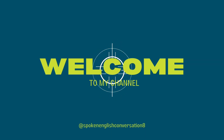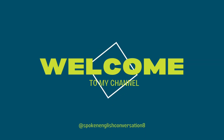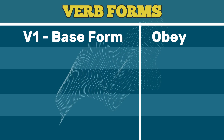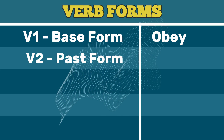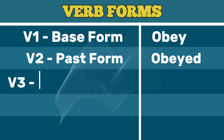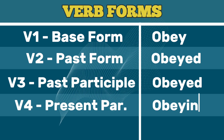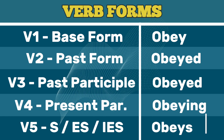Spoken English Conversations — subscribe please. V1 Base Form: Obey. V2 Past Form: Obeyed. V3 Past Participle: Obeyed. V4 Present Participle: Obeying. V5 Third Person Singular: Obeys.